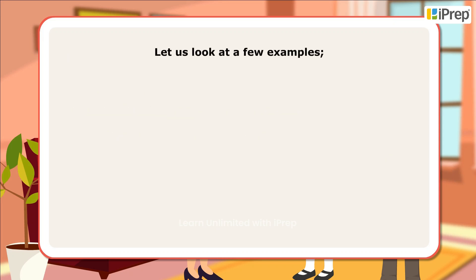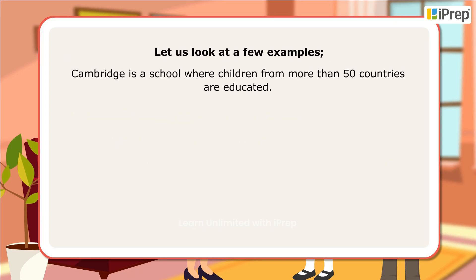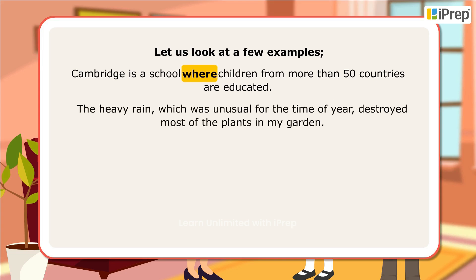Let us look at a few examples. Cambridge is a school where children from more than 50 countries are educated. 'Where' is used to denote a place. The heavy rain, which was unusual for the time of year, destroyed most of the plants in my garden. 'Which' is used for additional information.